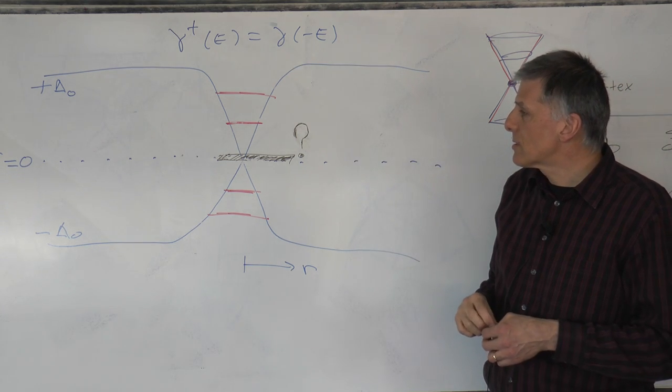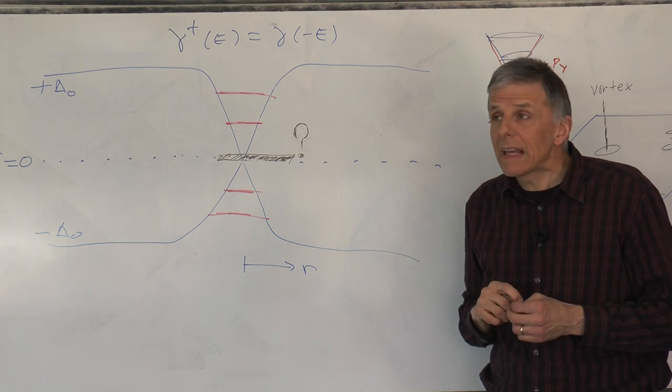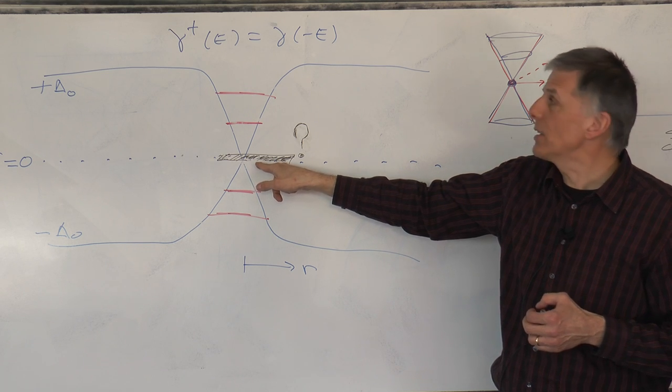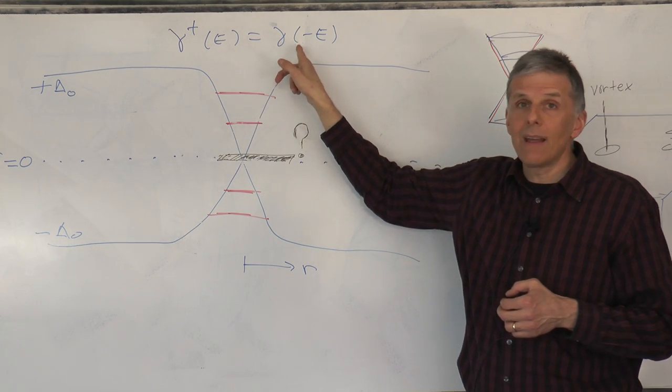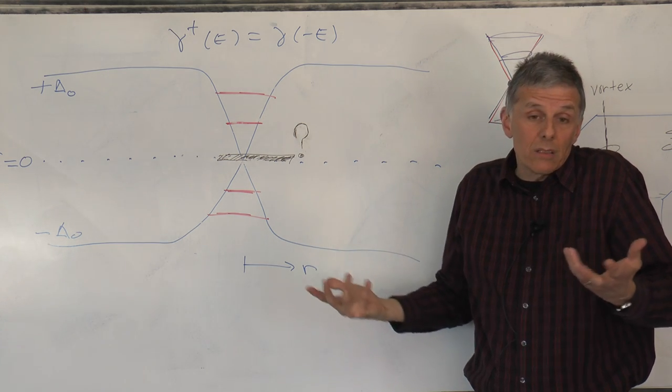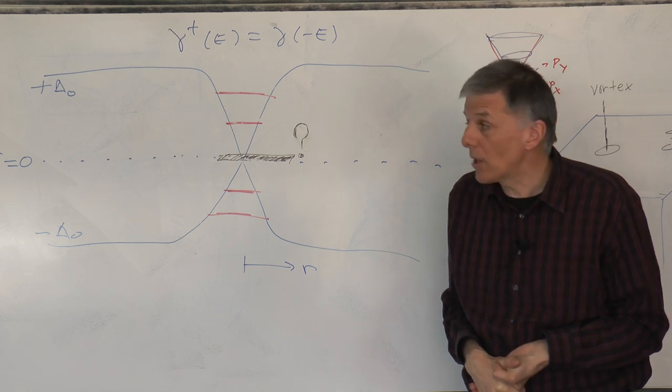It occurred to several researchers in the late 1990s, notably Grisha Wolovic, that if you manage to somehow have a level at zero energy, then you would have gamma equals gamma dagger. This is the hallmark, the definition if you wish, of a Majorana fermion, a particle which is equal to its own antiparticle.